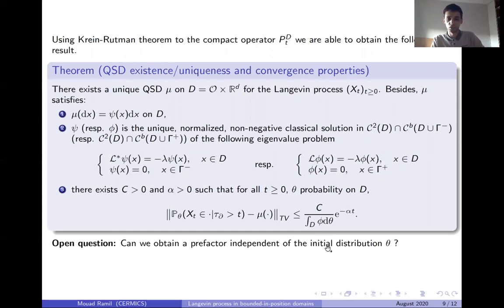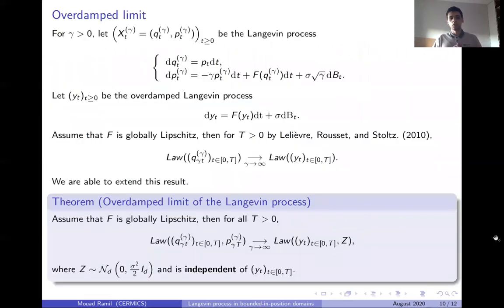Now let us study the overdamped limit of the Langevin process. By overdamped limit, I mean when this coefficient gamma goes to infinity. This is the Langevin process we consider. The only difference: we choose gamma positive and make a slight difference. Sigma here is independent of gamma and multiply sigma by square root of gamma. And again, this is the overdamped Langevin process.